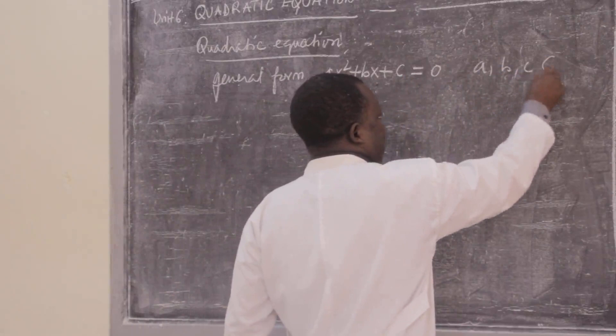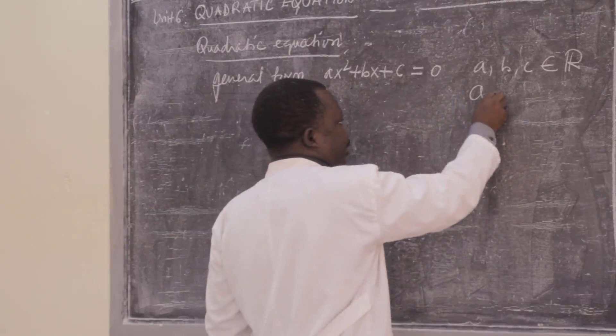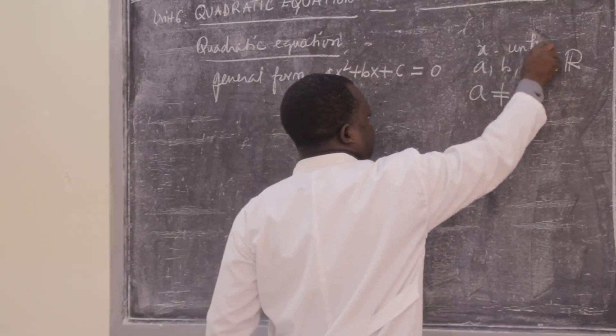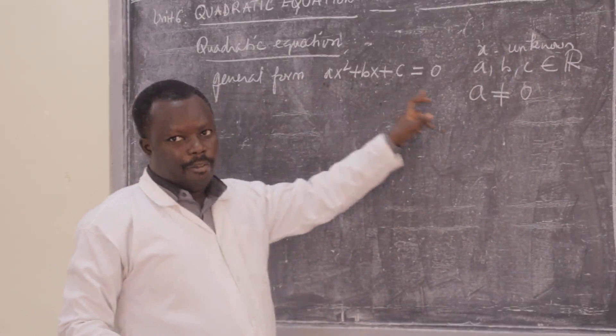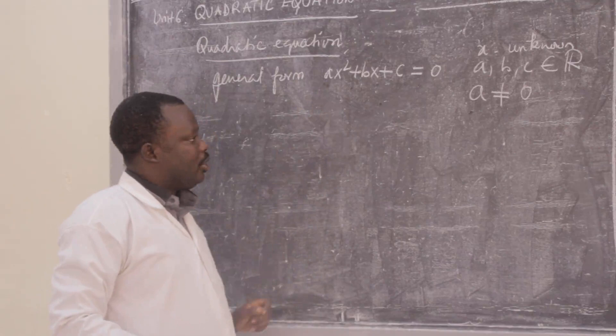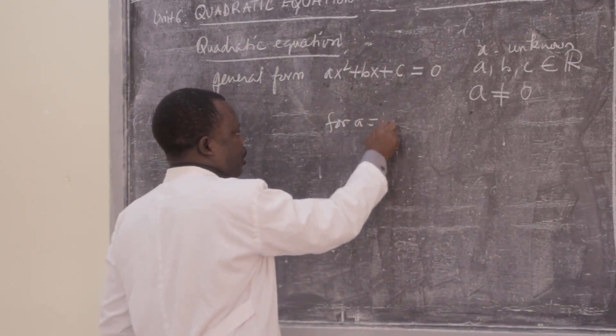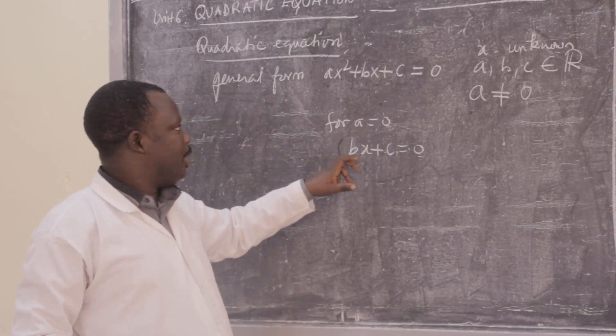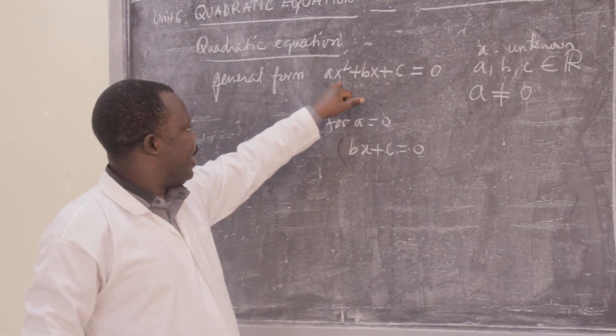Here, A, B, and C are real numbers, and A must not be equal to 0. A must be different from 0, and x is the unknown. A must be different from 0 because if A equals 0, the equation becomes bx + c = 0, which is not a quadratic equation — it is a linear equation. Any quadratic equation must have a term ax².